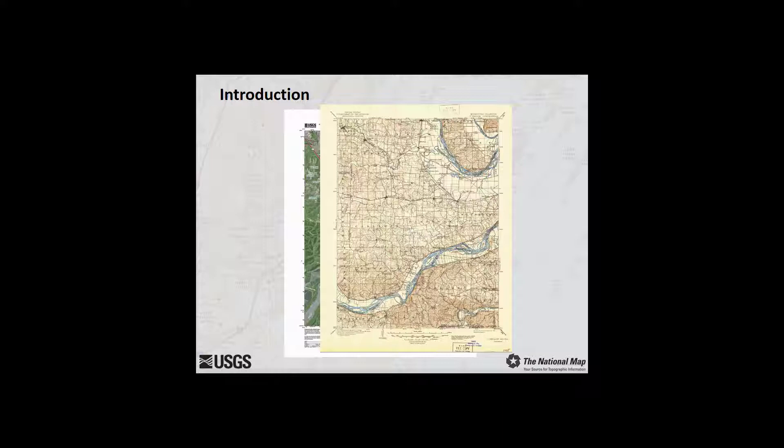This module will show you how easy it is to locate, download, and use these maps. These free maps are published as PDF. PDF was chosen as the format for these products because it is the only format that can carry vector data, raster data, map symbology, and text fonts, and can be displayed on a normal office computer without specialized software or experience, and will allow a map to be printed at the correct scale without specialized software or experience.